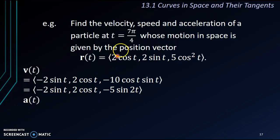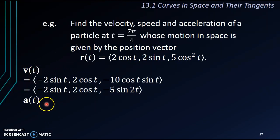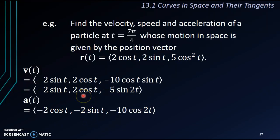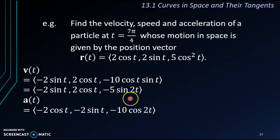We'll proceed to find the acceleration a(t). As we can see, the i component for a will be negative 2cos t (by differentiating negative 2sin t), the j component will be negative 2sin t (by differentiating 2cos t), and the k component gives negative 10cos 2t by differentiating negative 5sin 2t using the chain rule.